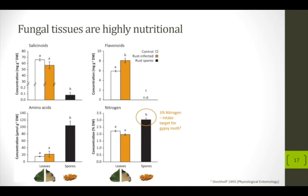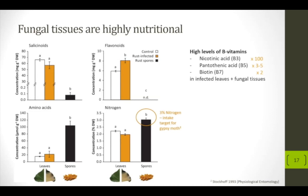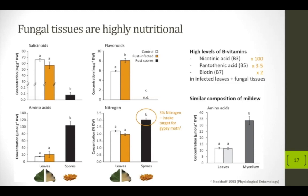On top of all that, infected leaves and the fungal tissue contain high amounts of certain B vitamins — vitamin B3, B5, and B7 have been shown to be twice to 100 times as high as in control leaves. For mildew and mildew-infected leaves, the situation looked quite similar. Basically all the other compounds showed very similar patterns.